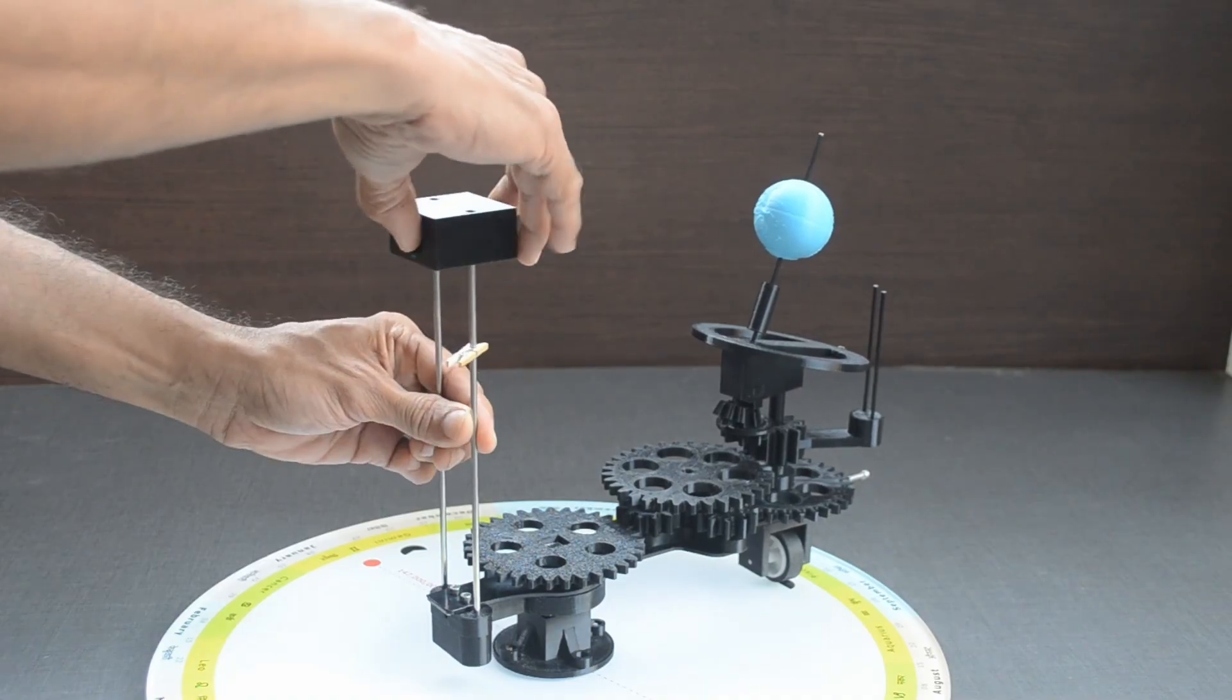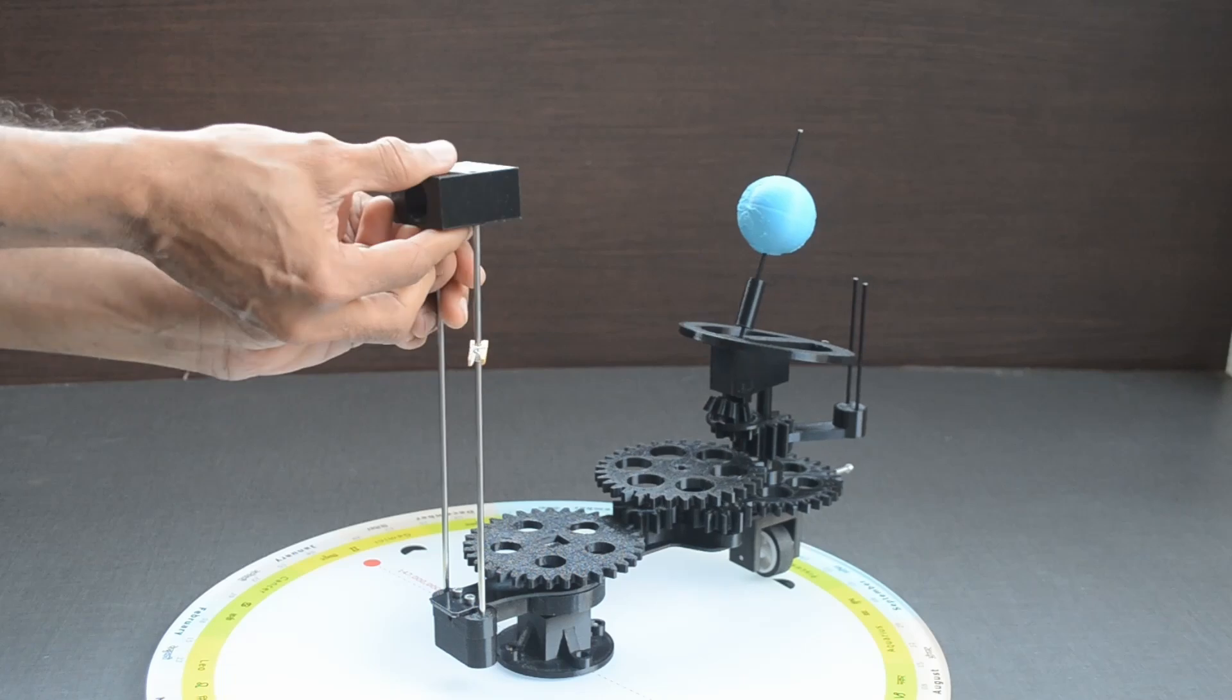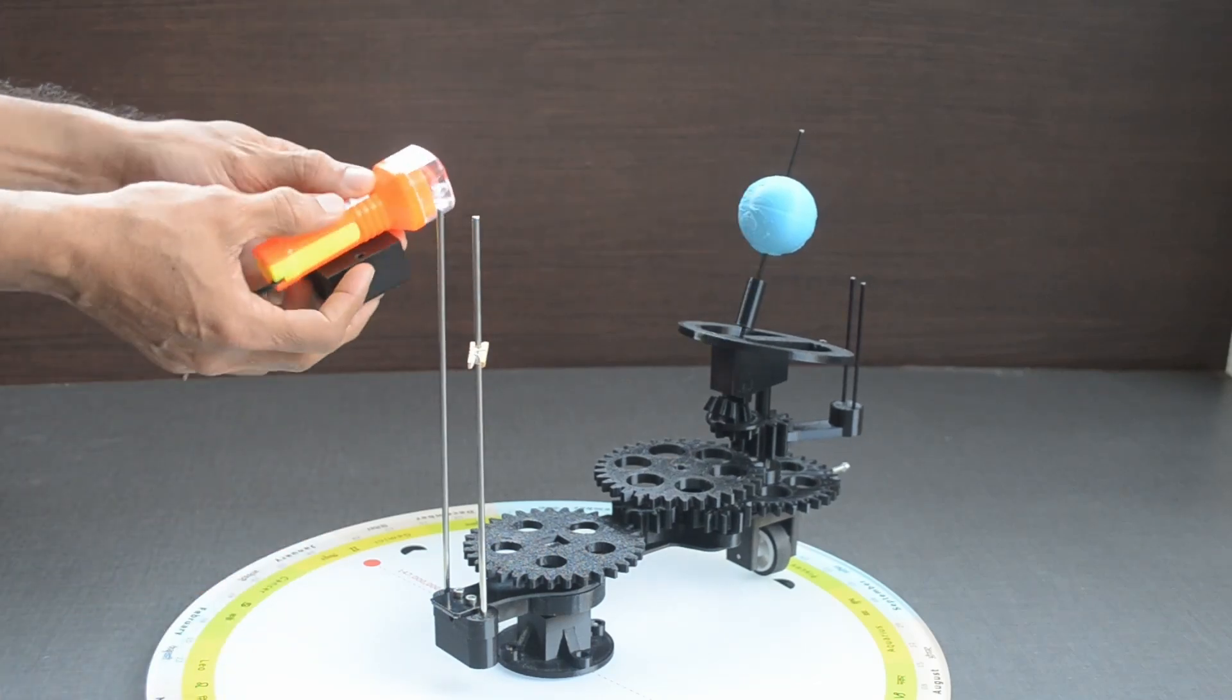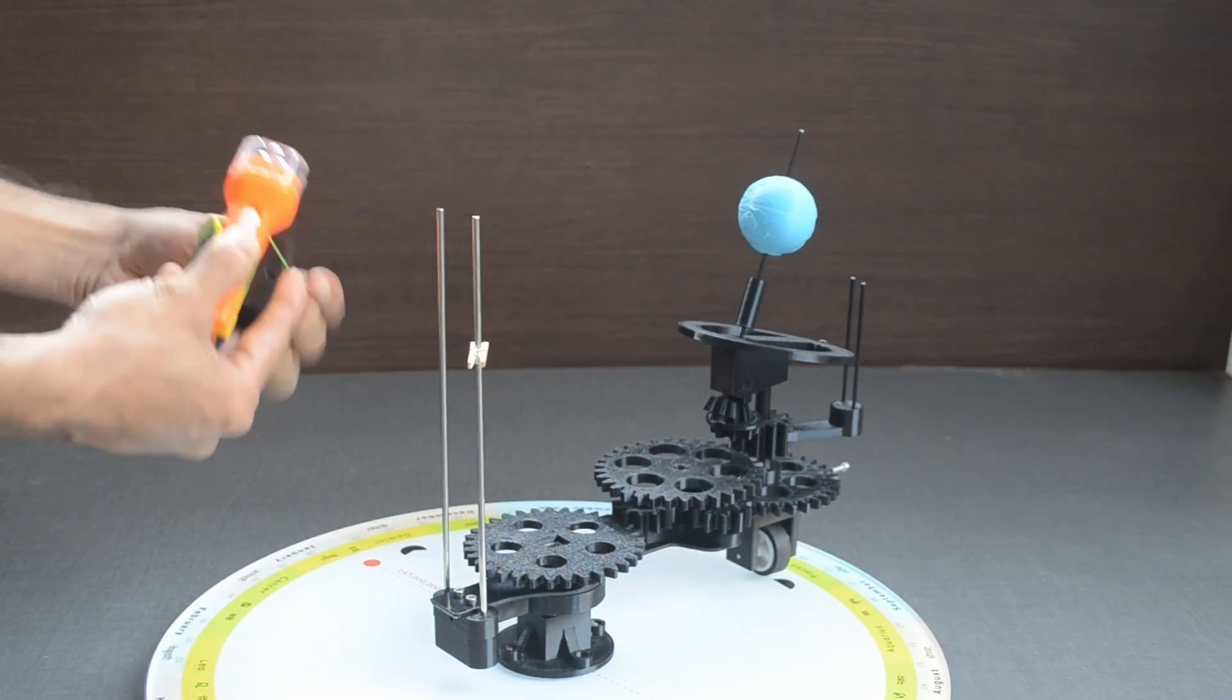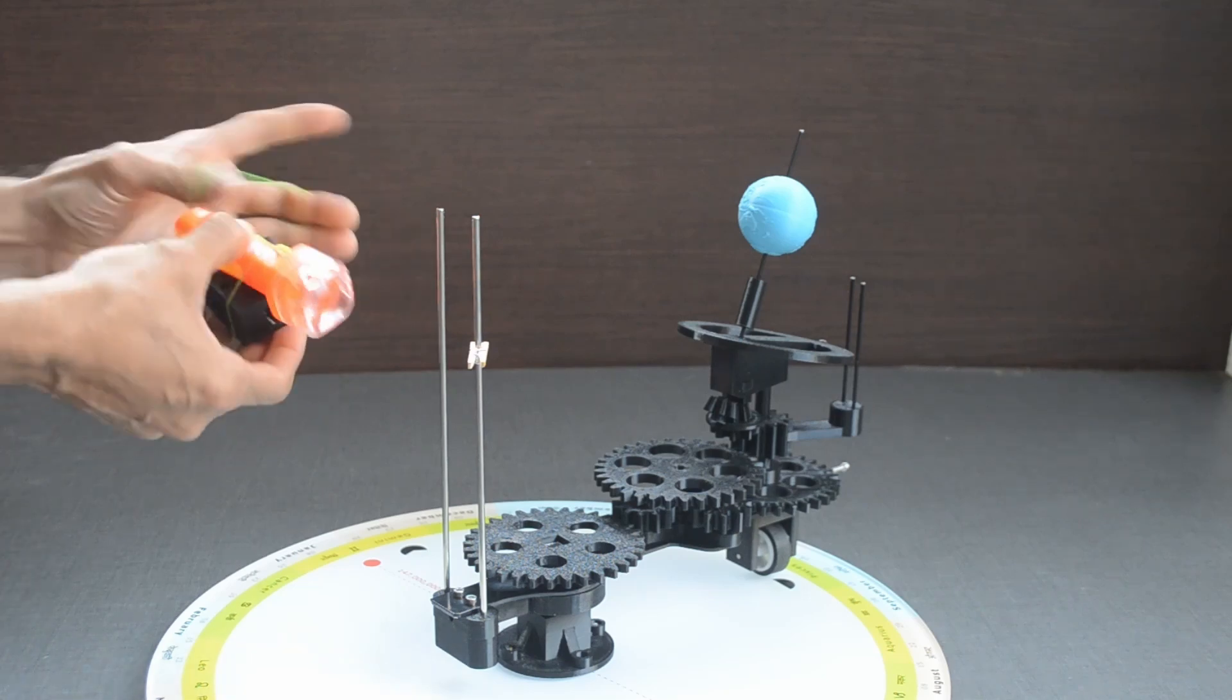Now let us replace the laser with this mini torch. We can see the lighted part of the Earth as it revolves around the Sun.